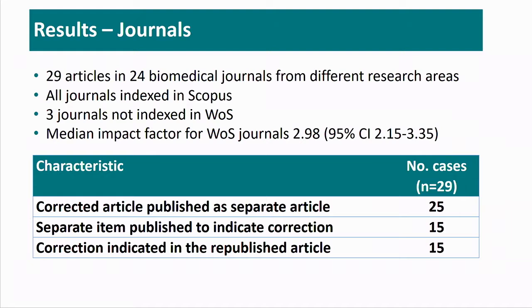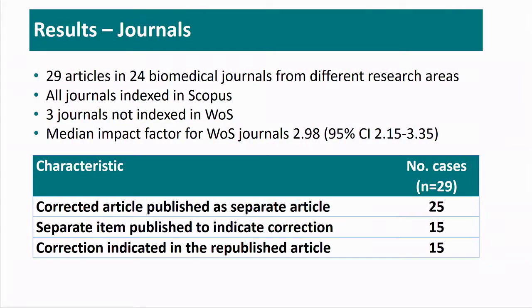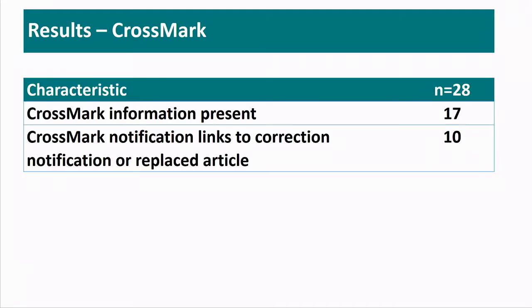So we studied 29 journals. These 29 articles were published in 24 medical journals from different research areas. They were all indexed in Scopus, some of them not in the Web of Science, and the median impact factor was about three. When we looked at these characteristics, we saw that out of 29, a corrected article as a separate article was published in 25 cases. In 15 of them — so half — there was a separate item that told the reader what everything was about, and in only 15 was the correction also indicated in the republished article.